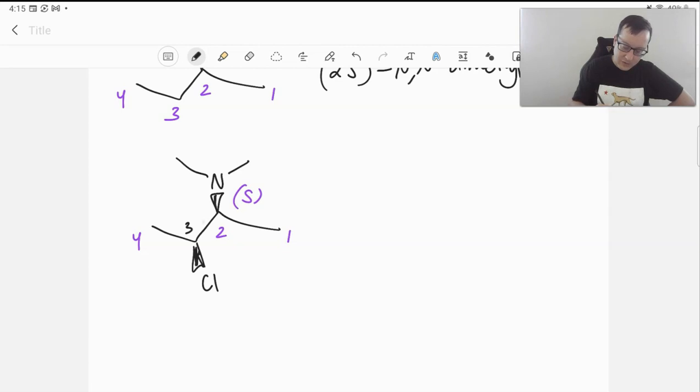1, 2, 3. This should be also S. Yeah. So, we're looking at S on both of these. So, we'll say 2S3S.